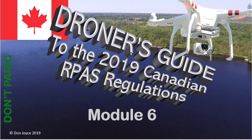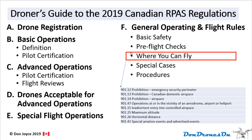Hi, this is Don from Don Drones On, and welcome to Module 6 of the Droner's Guide to the 2019 Canadian RPAS Regulations. In this module we'll go through the regulations associated with where you can fly. This is a classic case where the regulations are scattered all over the place — there's some in the 12, 13, 14, and there's a 47 and some 25s and a 41. I've tried to sort them out, bring them into a logical order, and present them all in one module.